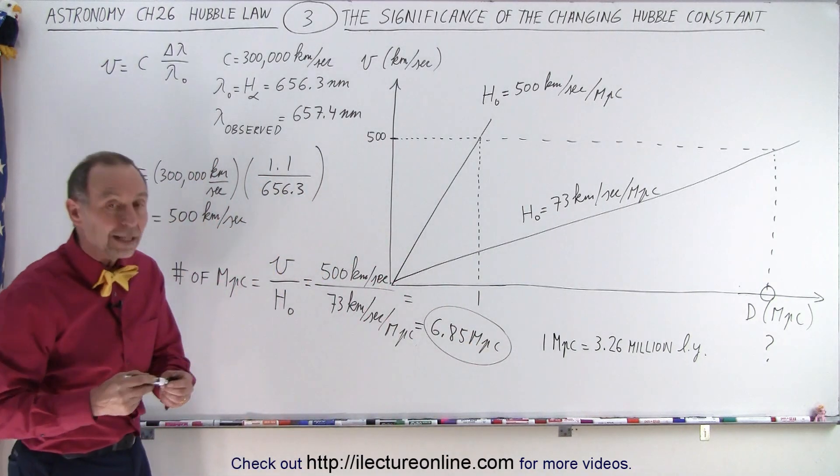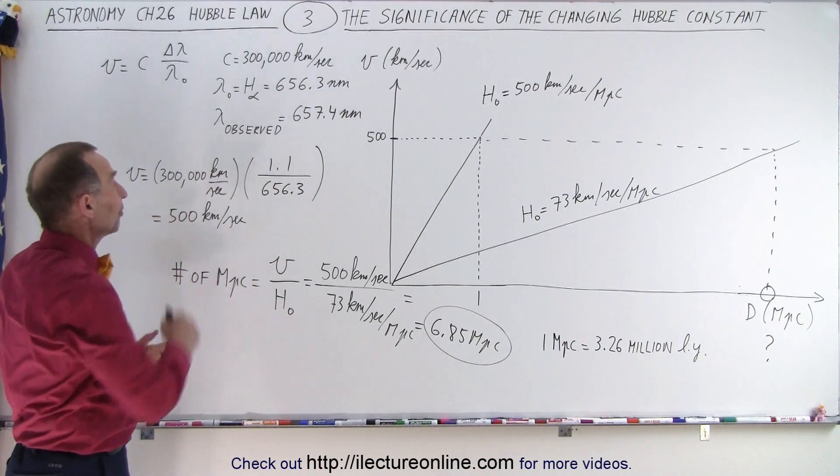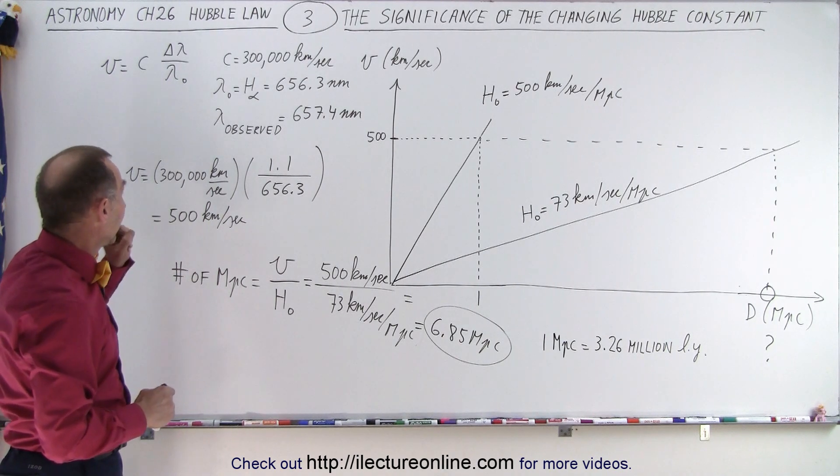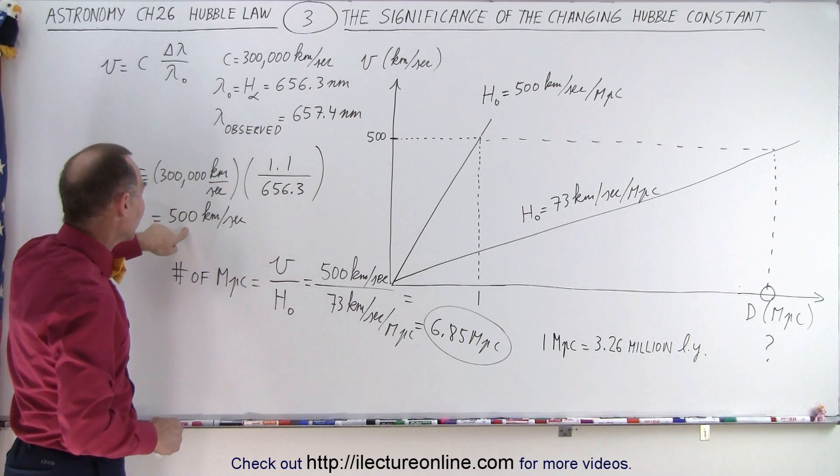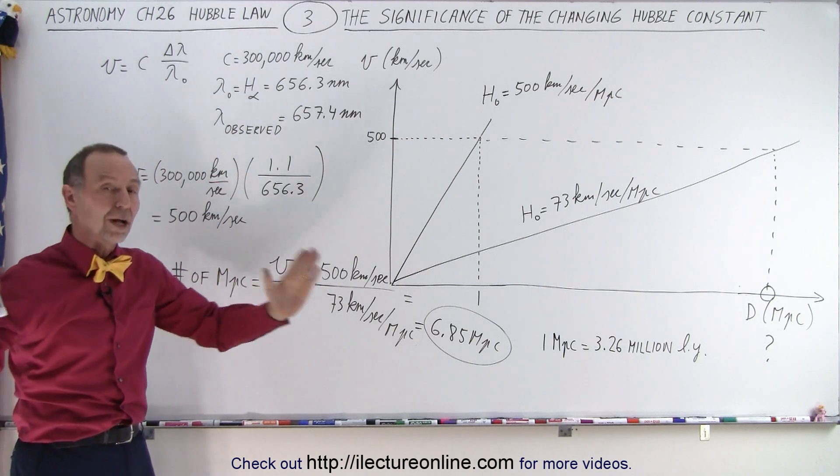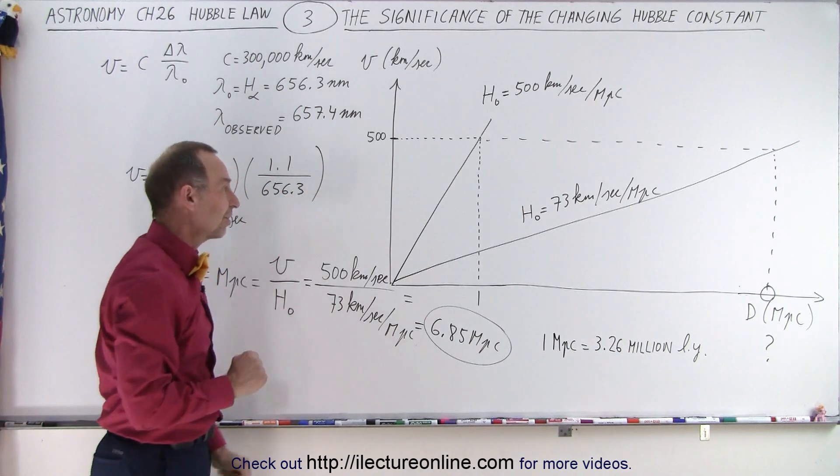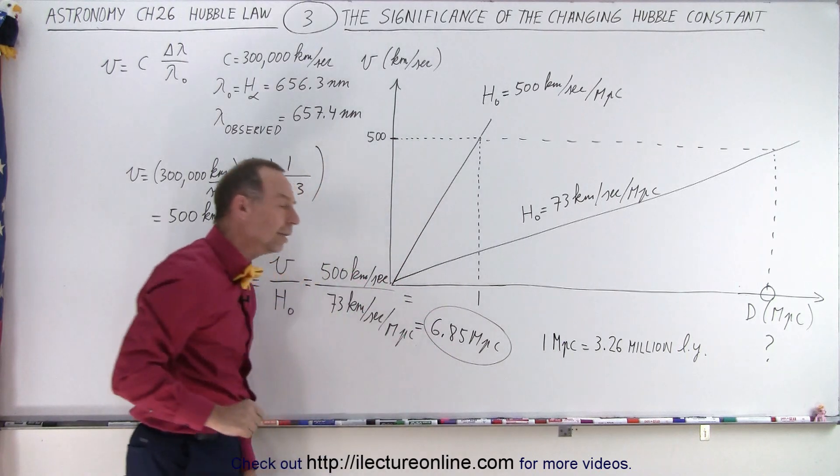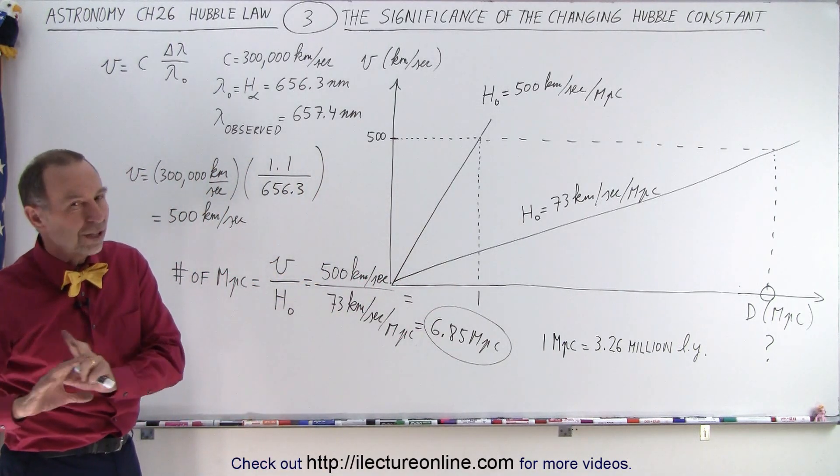In 1929, Hubble would have looked at that very same galaxy, measured the recessional velocity, which would be relatively easy to do back then, would get a change in the wavelength, the shift. It would calculate the velocity and say, since the Hubble constant that I estimated is 500 kilometers per second per megaparsec, I know that the galaxy is one megaparsec away.